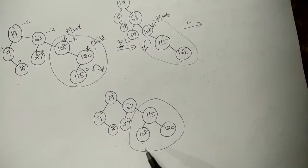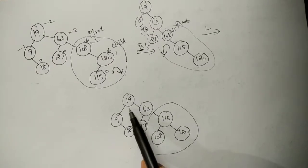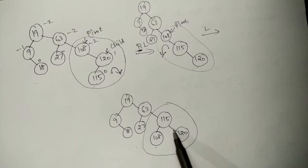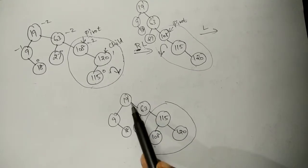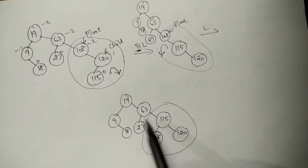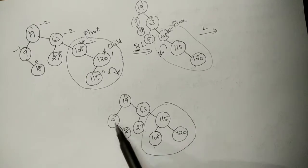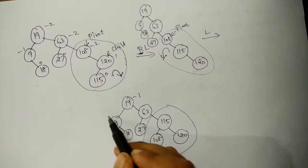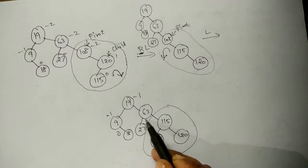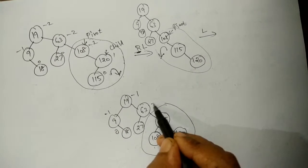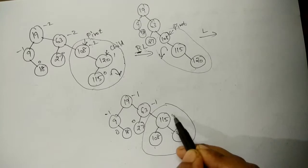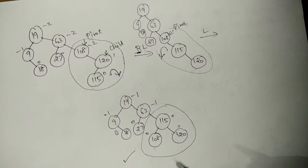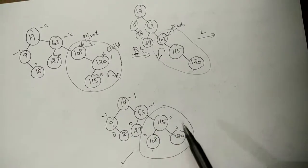Now check the balance factor of all the nodes in the tree. The balance factor of 19 is 2 minus 3, which is minus 1. For 63 it is 1 minus 2, which is minus 1. And balance factors of 0 throughout the rest. So the tree is made balanced after performing RL rotation.